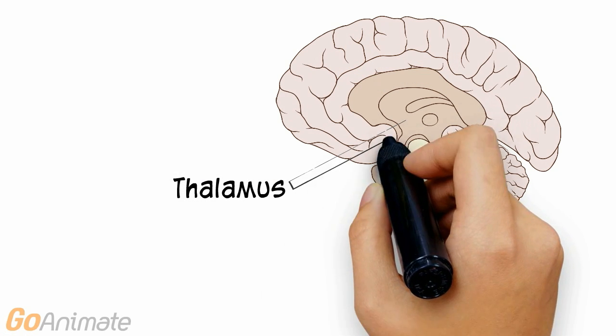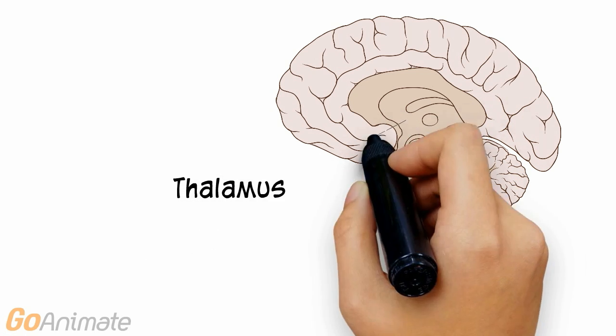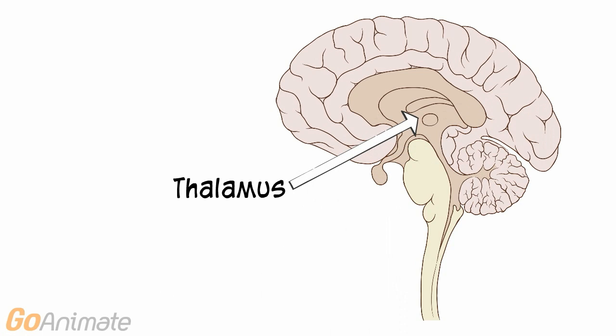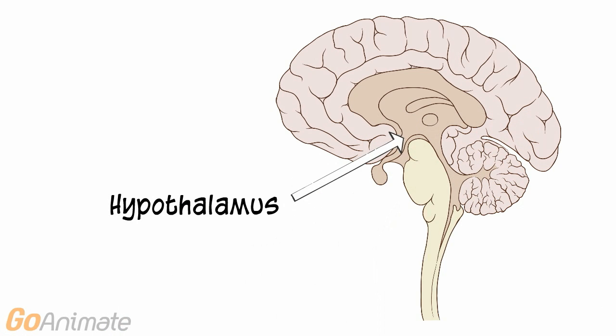The diencephalon is inferior to the corpus callosum and contains the thalamus and hypothalamus. The thalamus relays sensory information to the cerebrum and is also involved in emotions. The hypothalamus helps to regulate pituitary gland secretions and also regulates body temperature.